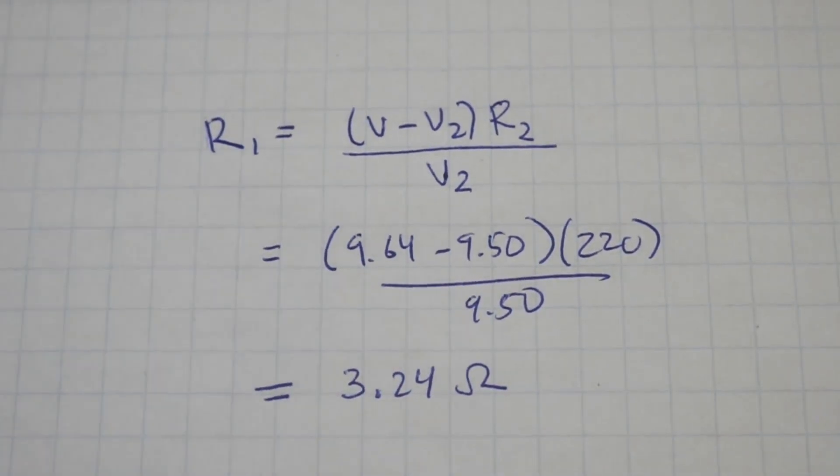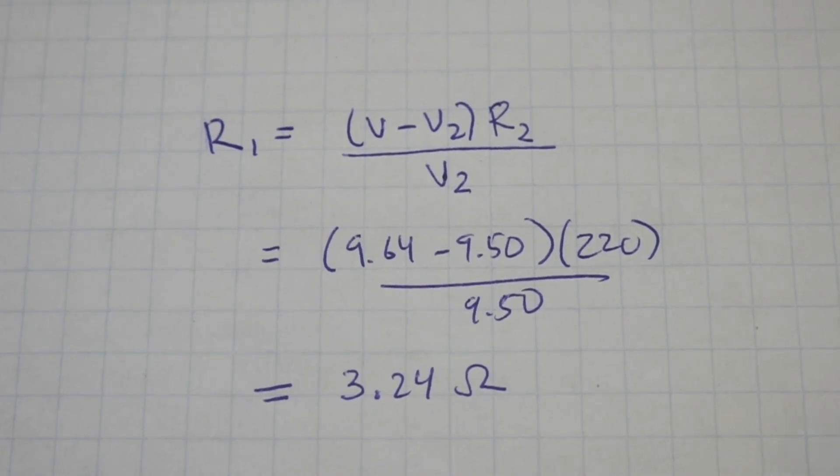Now that we have measured our values, we go back to the formula and substitute the values. Here it is. And we obtain a value for the internal resistance of the battery of 3.24 ohms.